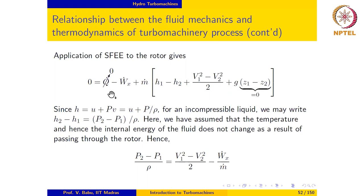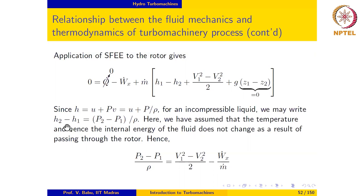As we have already seen, if we apply the Steady Flow Energy Equation (SFEE) to the rotor of a turbo machine assuming no heat loss, and neglect elevation changes across the rotor, we get a simplified expression. Keeping in mind that specific enthalpy h = u + p/ρ for an incompressible liquid where ρ is constant, we can write the enthalpy change h₂ − h₁ as (p₂ − p₁)/ρ.